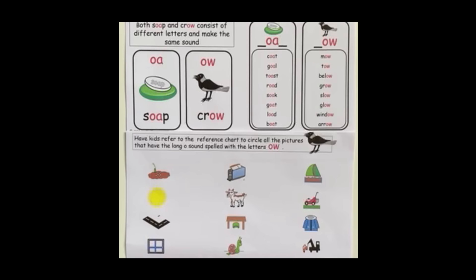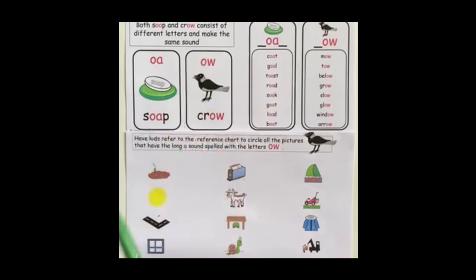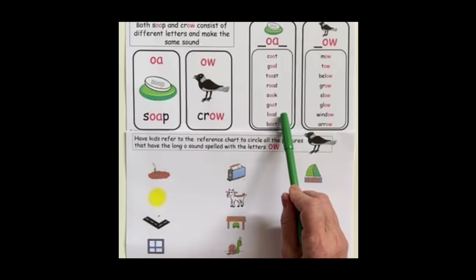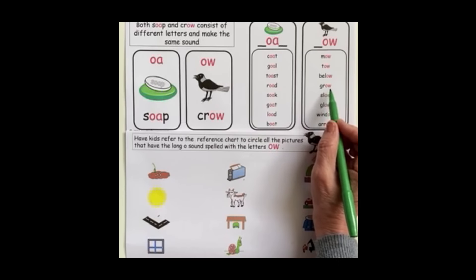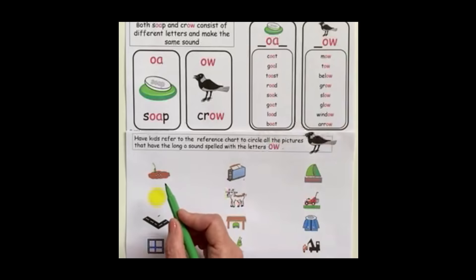This is the activity where kids have to circle the pictures that have the long O sound made with the letters O-W. That is why we have the reference chart here for kids to look at, because it is very difficult to distinguish which words have the O-A letters and which words have the O-W letters, since they both make the same sound: long O. The first picture is grow — we can see the word grow on the chart, and it is an O-W word, so we will circle that.